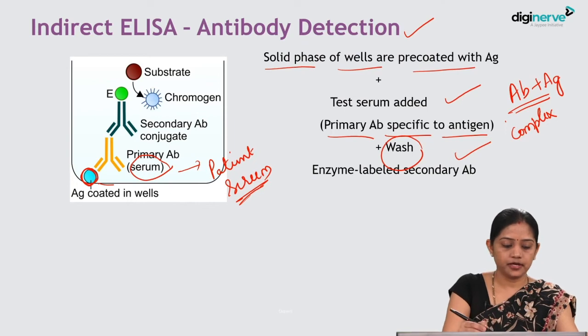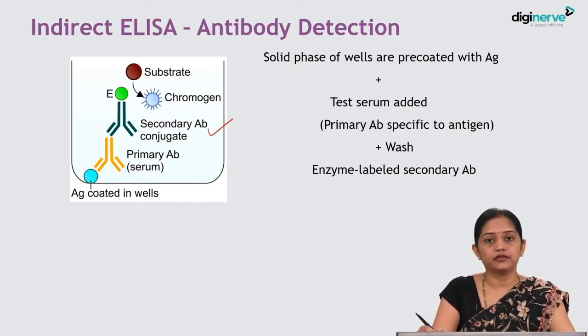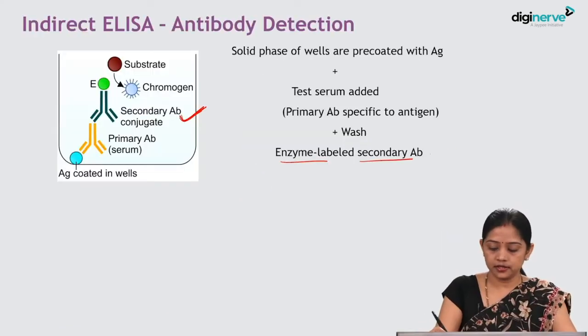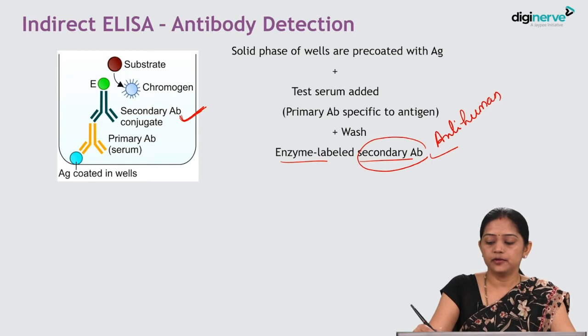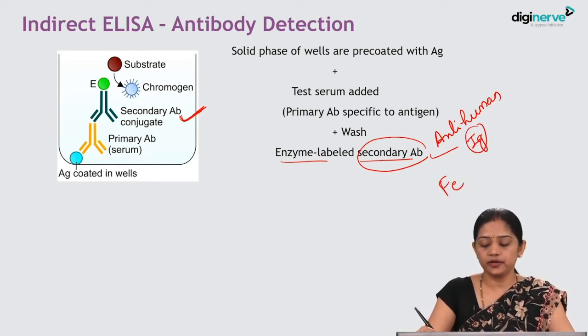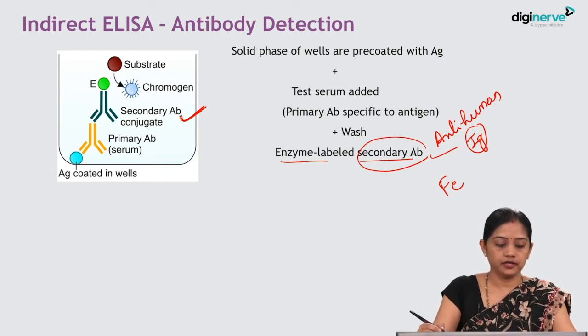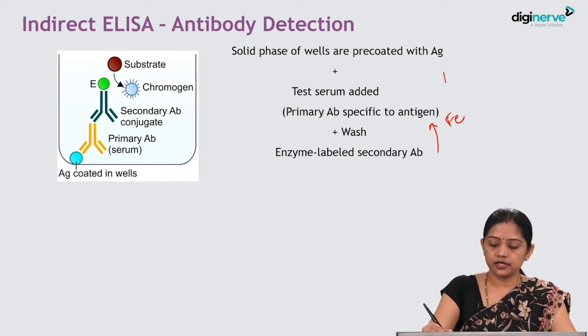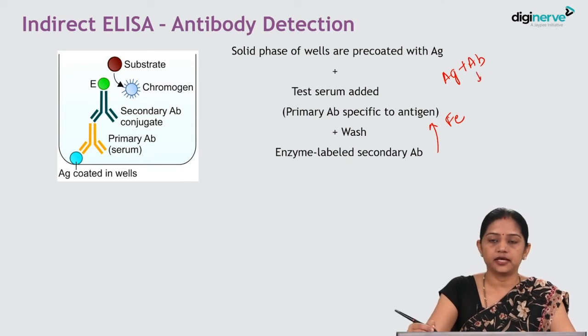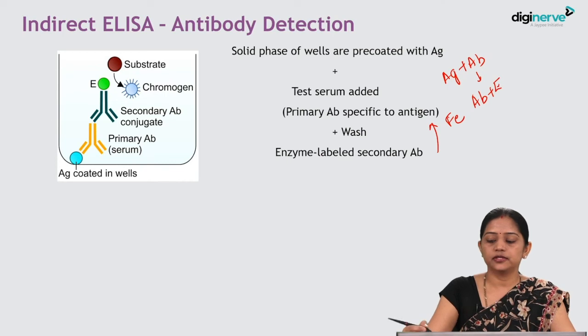After the wash step, a secondary antibody labeled with enzyme is added. The enzyme-labeled secondary antibody is nothing other than an anti-human immunoglobulin, which will specifically bind to the Fc region of any human immunoglobulin. So this secondary antibody will bind to the Fc region of the primary antibody that was present in the patient test serum, forming a chain: antigen — primary antibody — enzyme-linked secondary antibody.